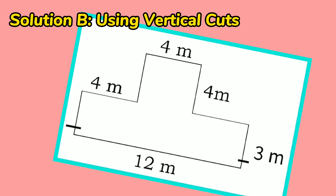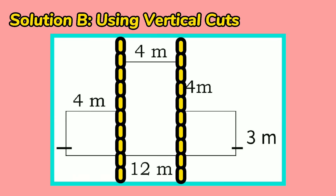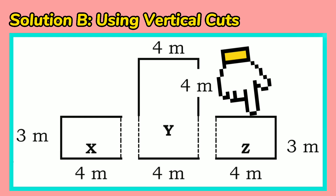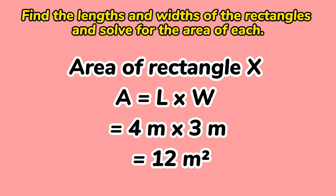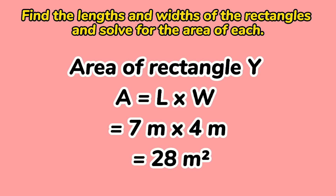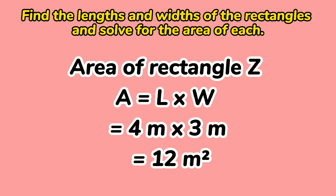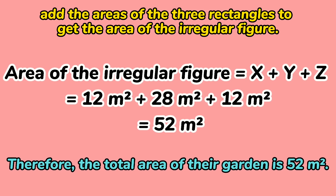You can also try to solve for the area using this solution. First, let's cut the figure into 3 rectangles using vertical lines. We have Rectangle X, Rectangle Y, and Rectangle Z. Next, find the lengths and widths of the rectangles and solve for the area of each. Area of Rectangle X: 4 times 3 is 12 square meters. Area of Rectangle Y: 7 times 4 is 28 square meters. And the area of Rectangle Z: 4 times 3 is 12 square meters. Then, let's add all 3 rectangles to get the area of the irregular figure, which gives you 52 square meters.